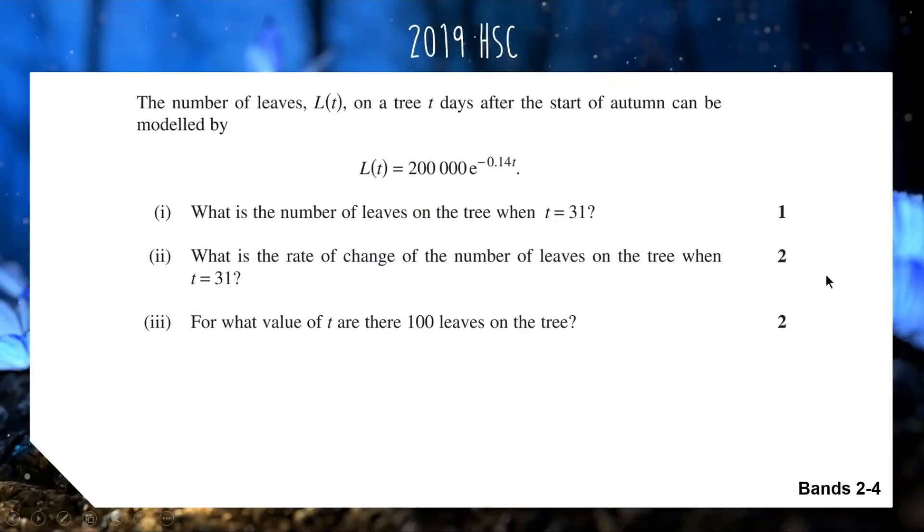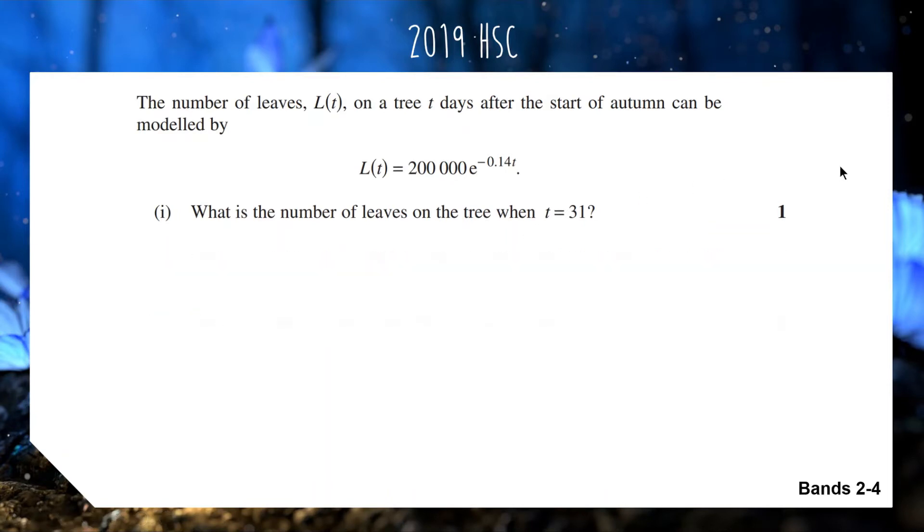Up next we have a question from the 2019 HSC with three parts that range from bands 2 to 4. We have the number of leaves L on a tree after t days at the start of autumn modeled by this exponential function. First part for 1 mark: what is the number of leaves when t equals 31?